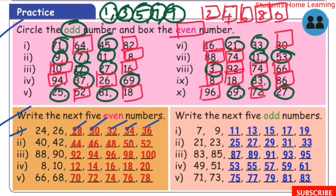Next set starting from 40, 42 — the even numbers are 44, 46, 48, 50, 52. Third set starting from 88, 90 — the even numbers are 92, 94, 96, 98, 100. Another set starting from 8, 10 — the even numbers are 12, 14, 16, 18, 20.